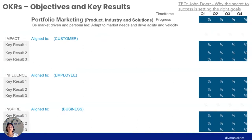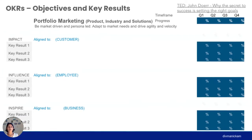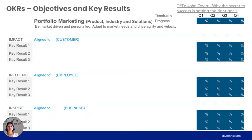Last but not least, let's talk about OKRs and how they play a very important role. I'm a big fan of John Doerr and the OKR model — I always encourage folks to check out his TED talk, 'Why the Secret to Success Is Setting the Right Goals.' As part of OKRs, always remember to have a maximum of three objectives. I've aligned my three objectives to the core values we have as a team: impact, influence, and inspire. The first — impact — is aligned to the customer.